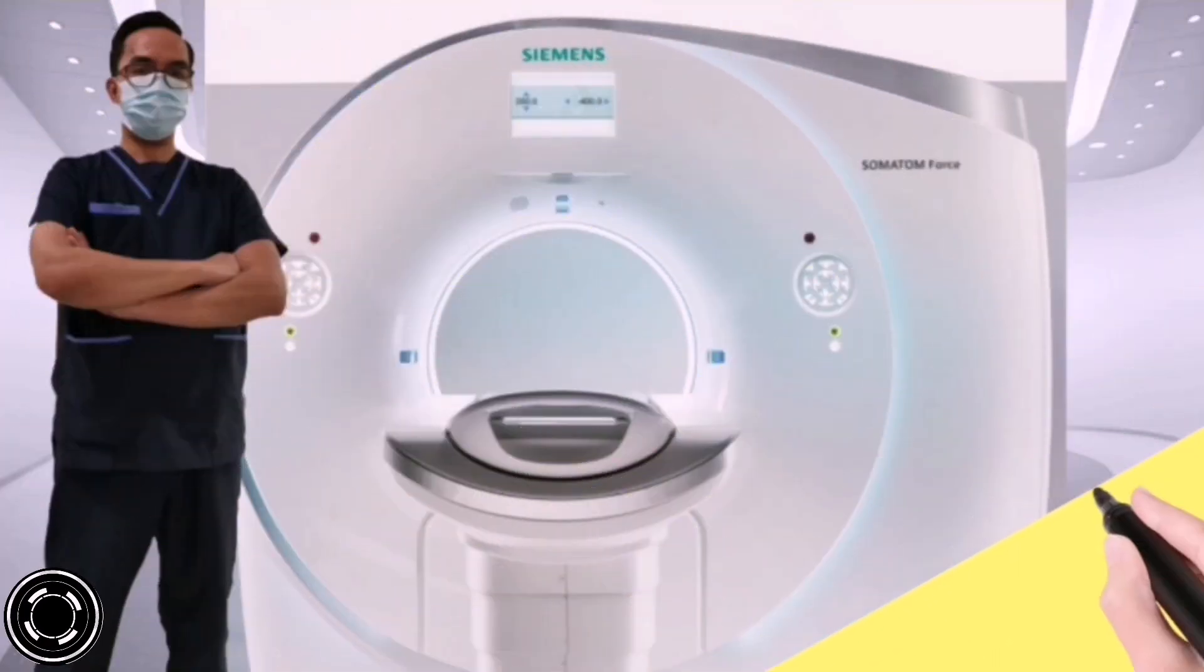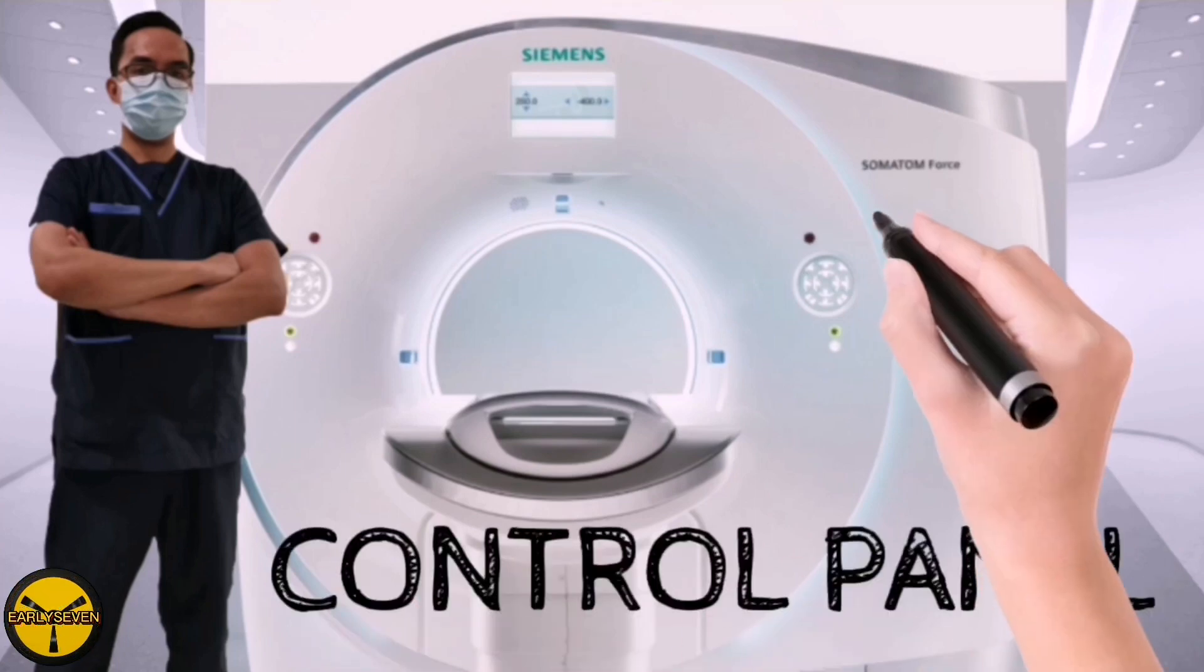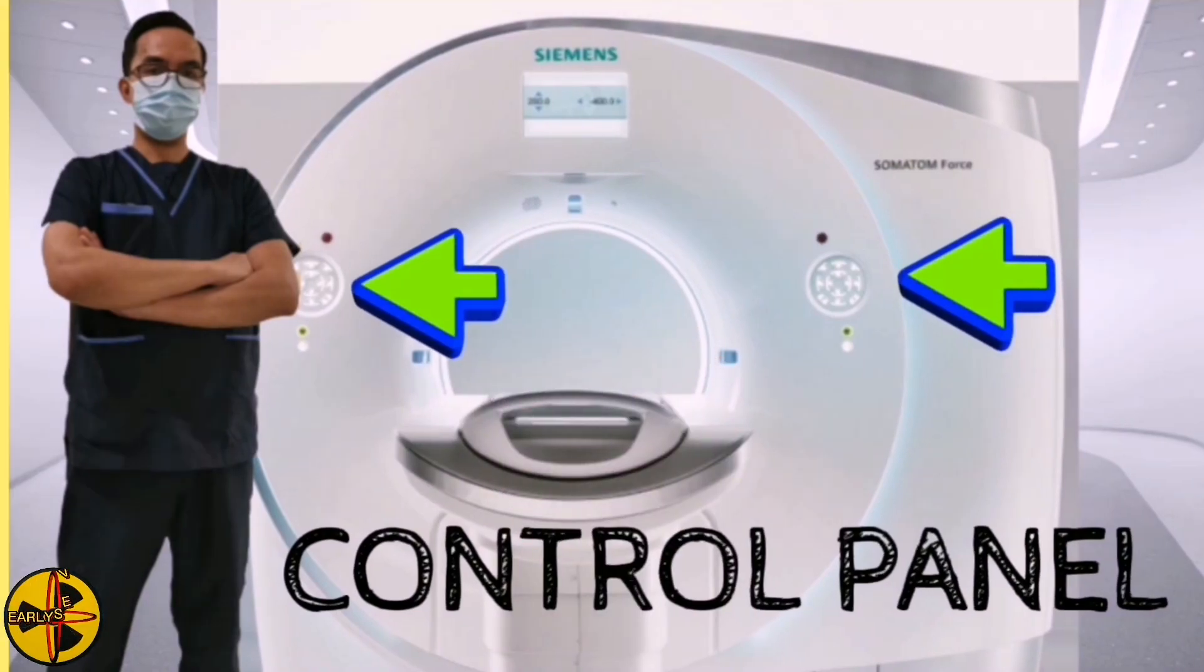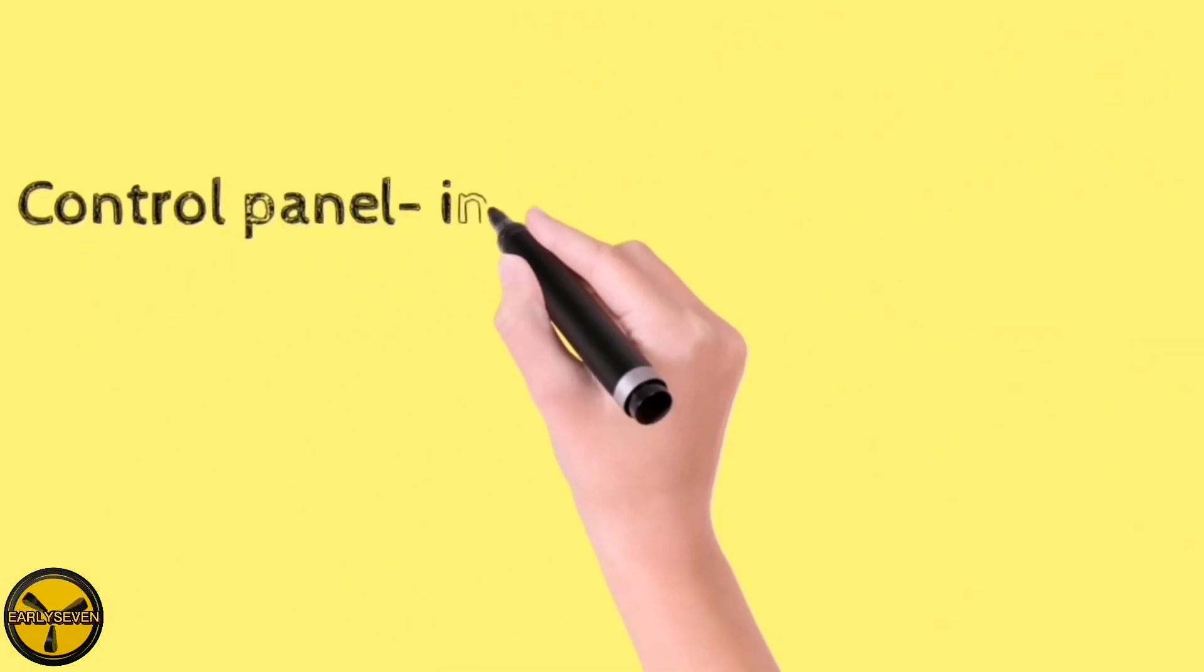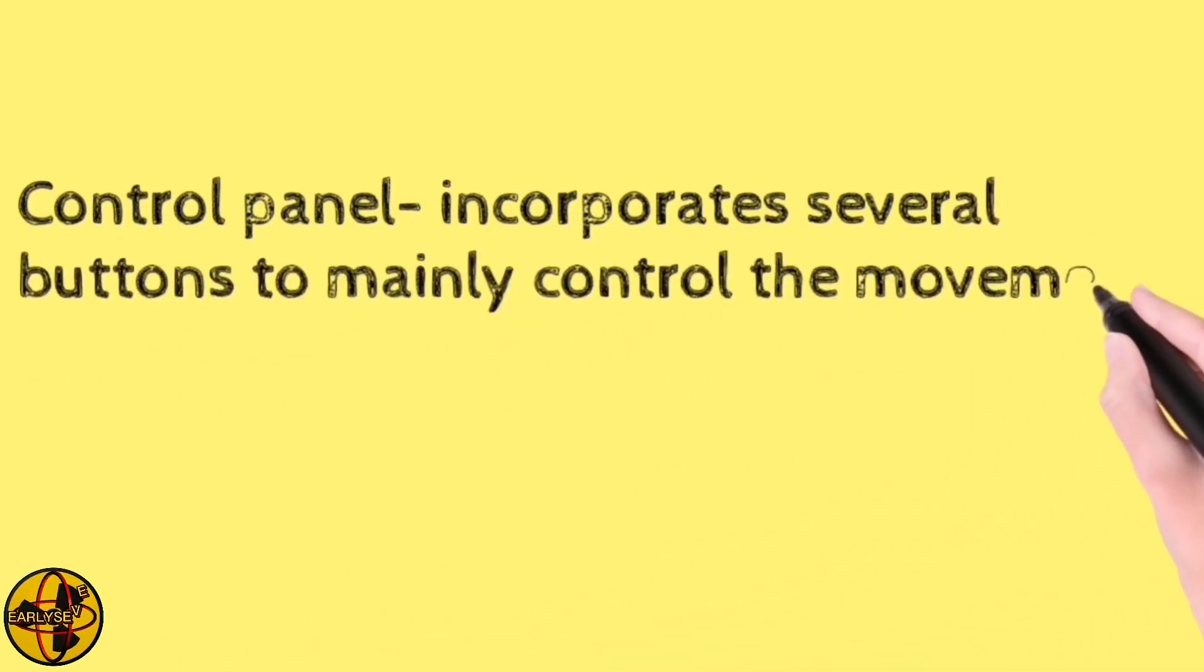The third functions in the CT scan gantry is the control panel which is located on both side of the CT scan gantry. The control panel incorporates several buttons to mainly control the movements of the gantry and table.